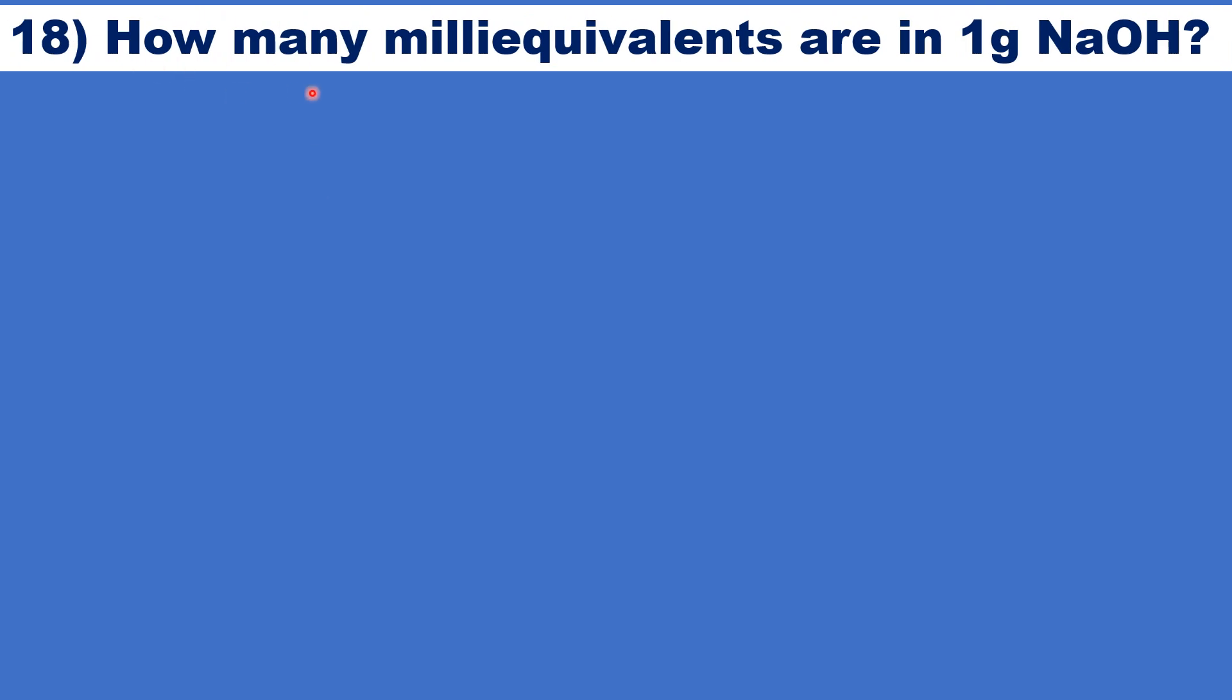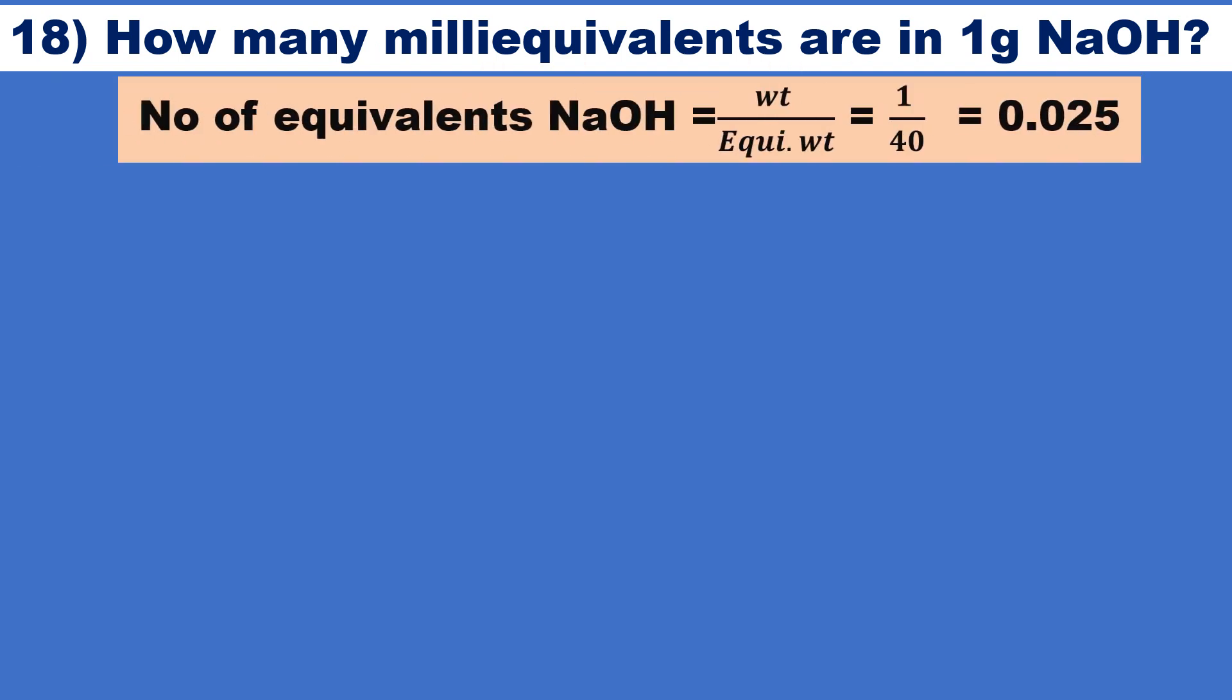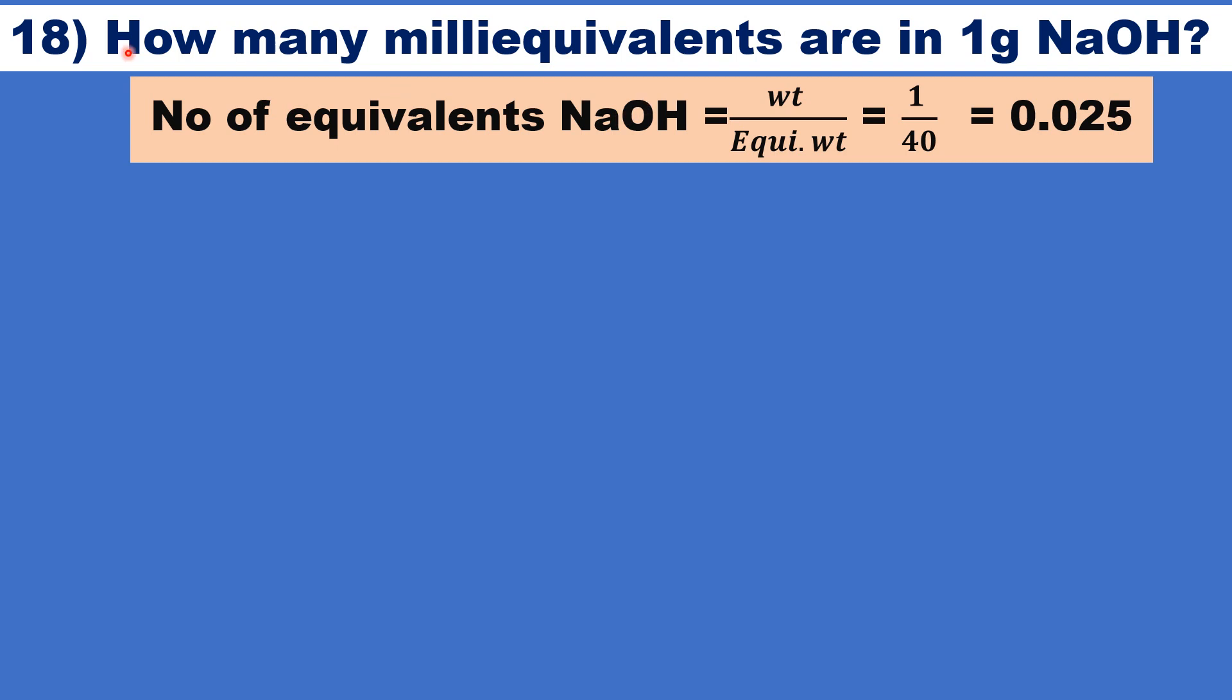Let us see the next question. How many milliequivalents are present in 1 gram of sodium hydroxide? How many milliequivalents are present in 1 gram sodium hydroxide? What is the formula? Number of first, let us first calculate the number of equivalents of sodium hydroxide. That is number of moles of sodium hydroxide. Weight by equivalent weight. Number of moles means weight by molecular weight. Number of equivalents means weight by equivalent weight.